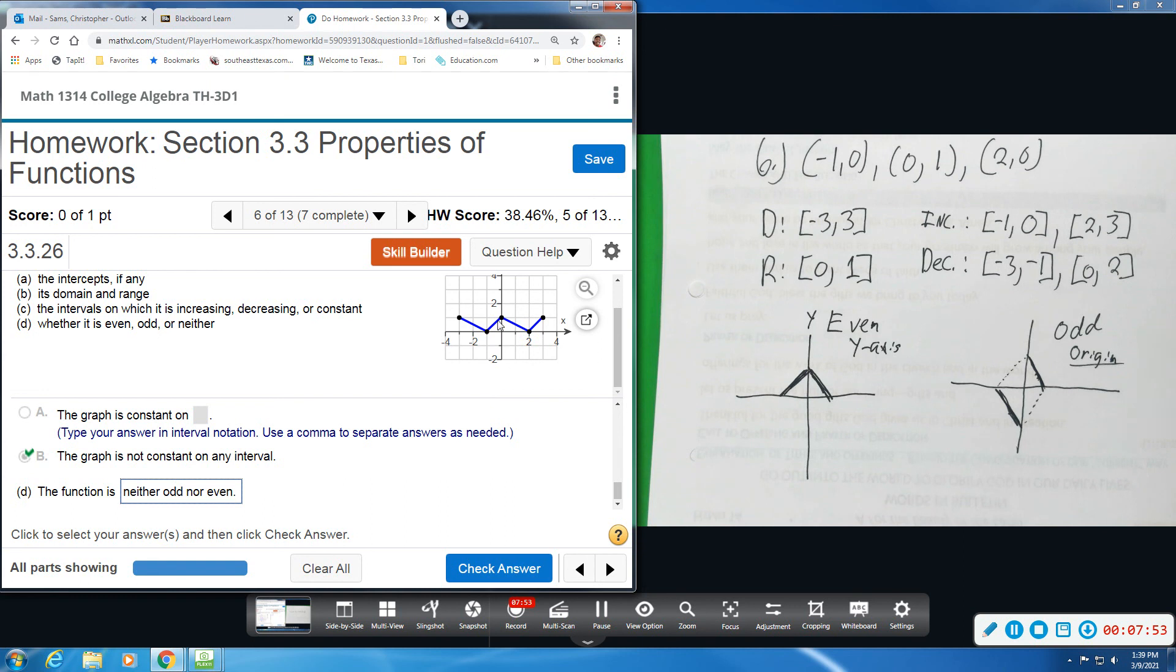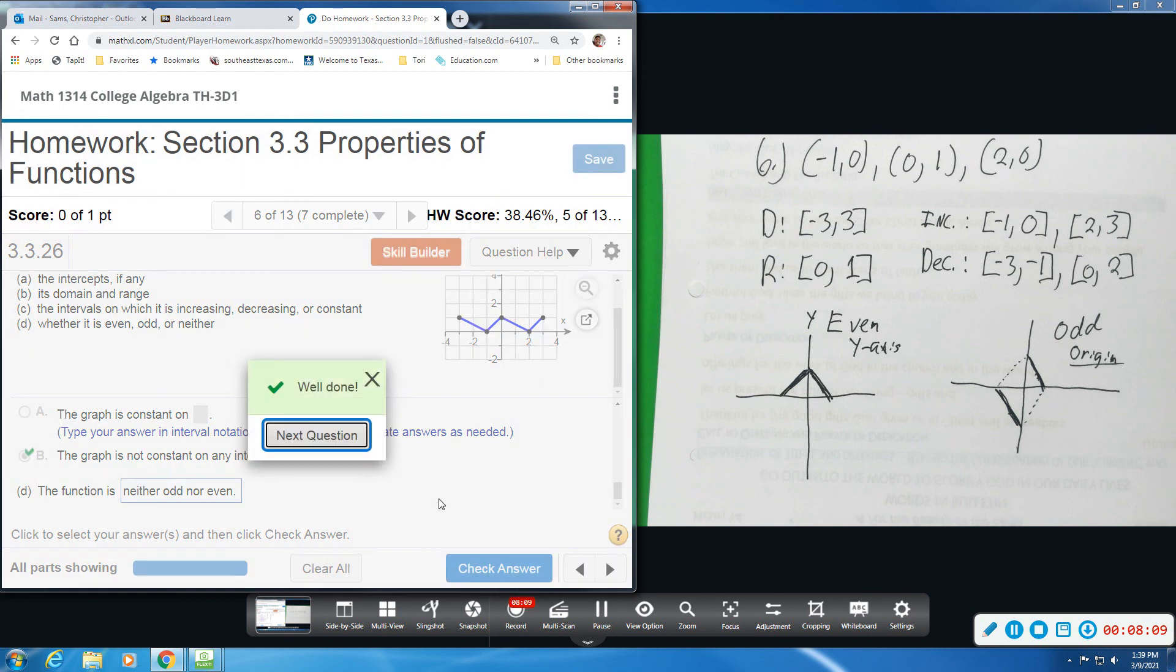But in this case, it is neither. It looks like this graph just took this image and copied and pasted it right here. So if you were to flip it, it would not line up exactly. It would be close but not exact. So it's neither even or odd. Here we go.